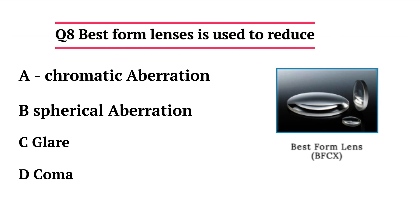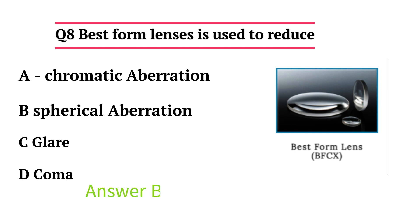Best form lenses are used to reduce: Option A - chromatic aberration, Option B - spherical aberration, Option C - glare, Option D - all of the above. The correct answer is spherical aberration.